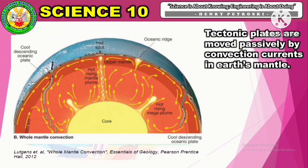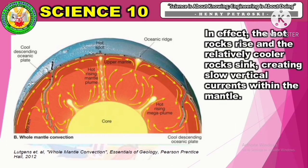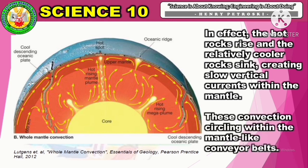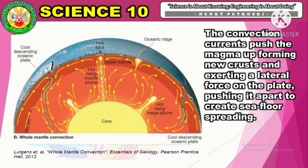As presented in the conveyor belt model and the convection current activity, tectonic plates are moved passively by convection currents in Earth's mantle. Mantle rocks near Earth's core become extremely hot, making them less dense than the cooler mantle rocks in the upper layers. The hot rocks rise and the relatively cooler rocks sink, creating slow vertical currents within the mantle. The convection currents push the magma up, forming new crusts and exerting a lateral force on the plates, pushing them apart to create seafloor spreading.